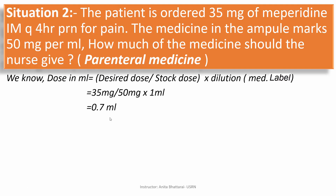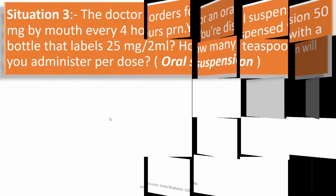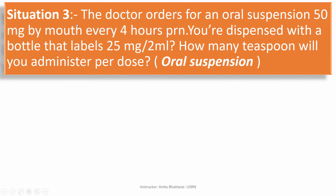Let's go to the next situation — situation 3. The doctor orders an oral suspension of 50 mg by mouth every 4 hours PRN. You are dispensed a bottle labeled 25 mg per 2 ml. How many teaspoons will you administer per dose? This is an oral suspension question.